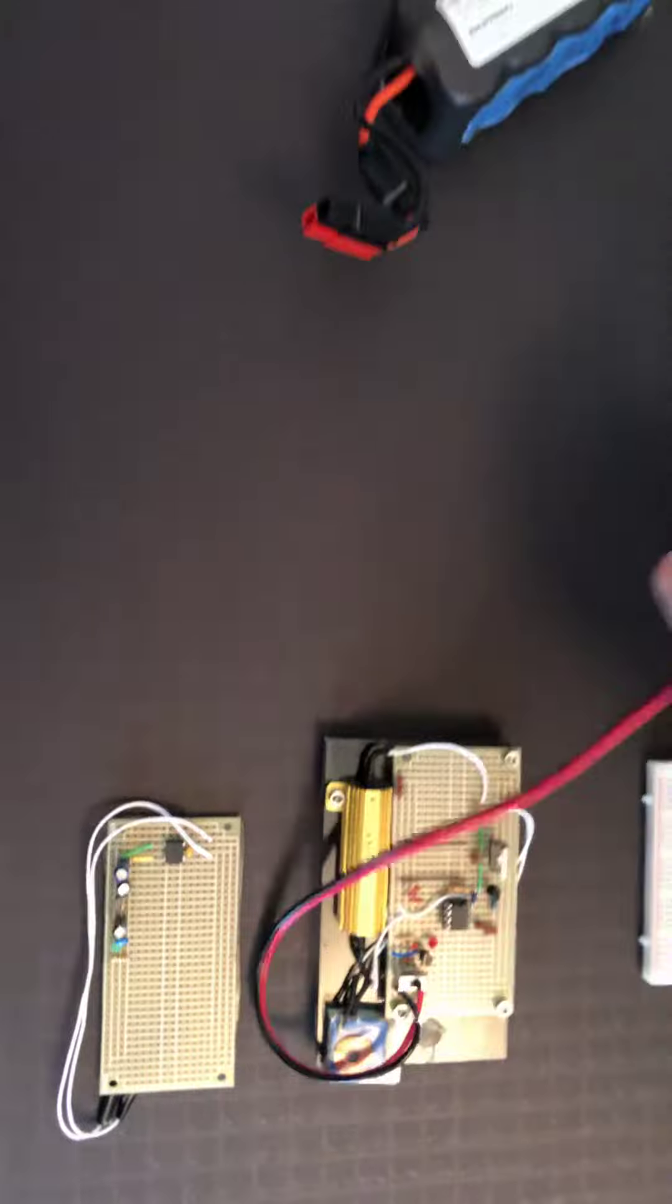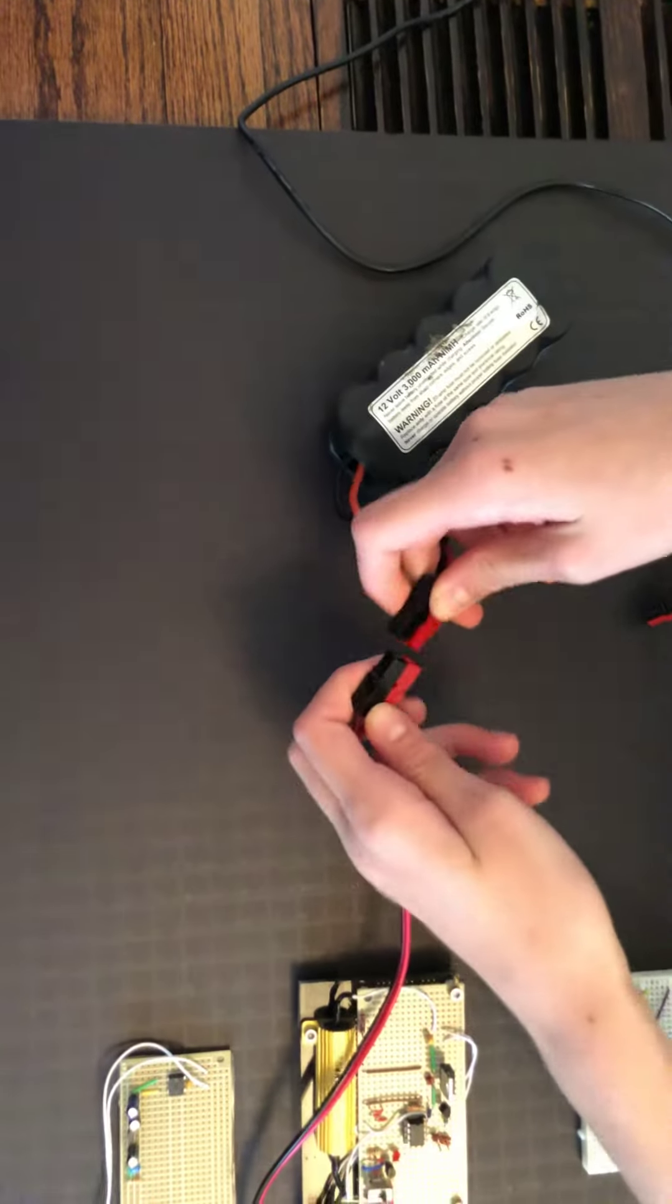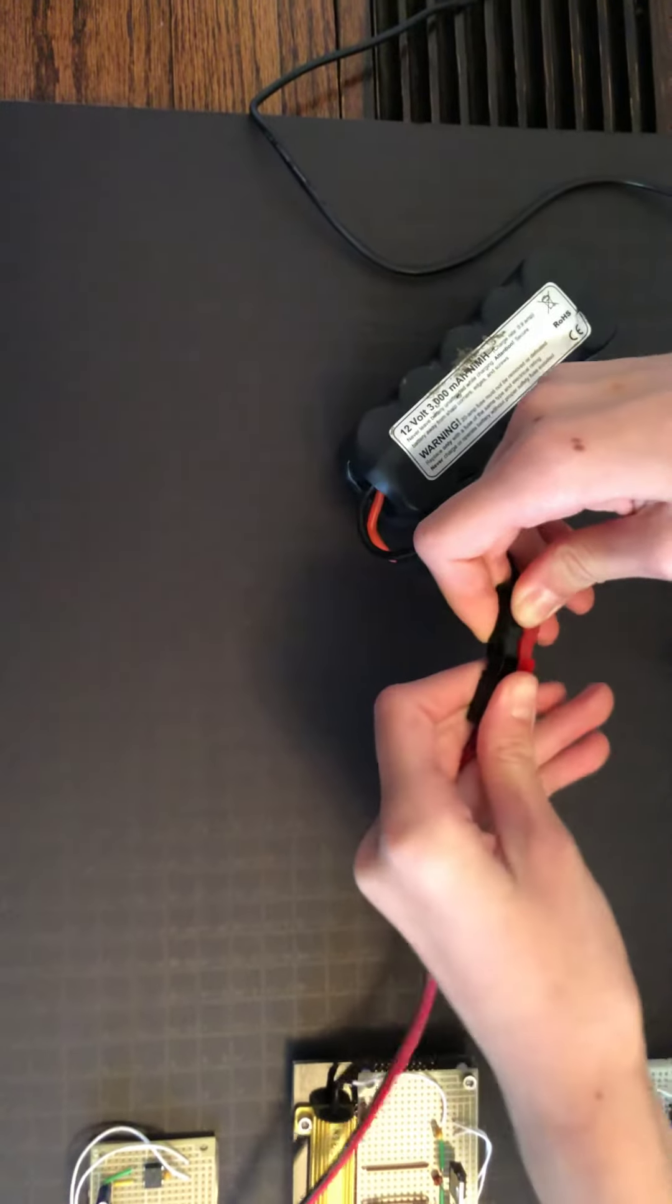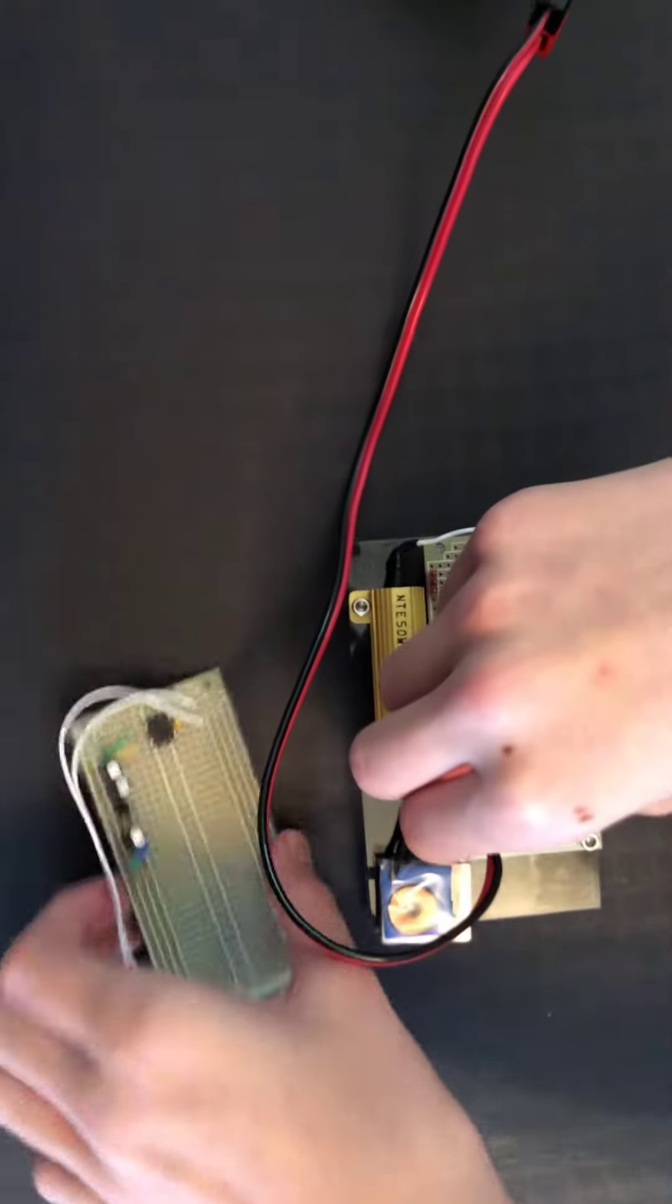My transmitter circuit can connect to both the wall and a 12-volt battery. Right now, I'm going to connect it to a 12-volt battery and then turn the power on.